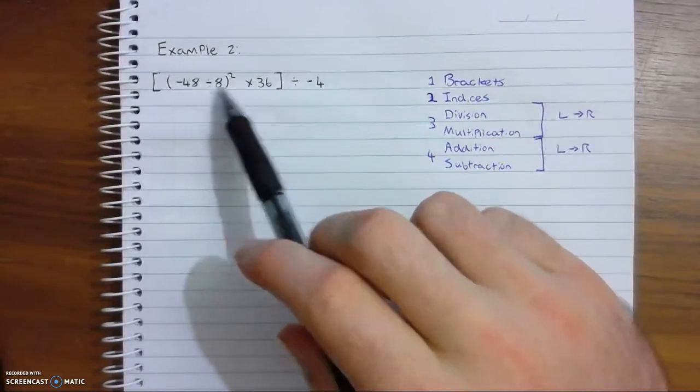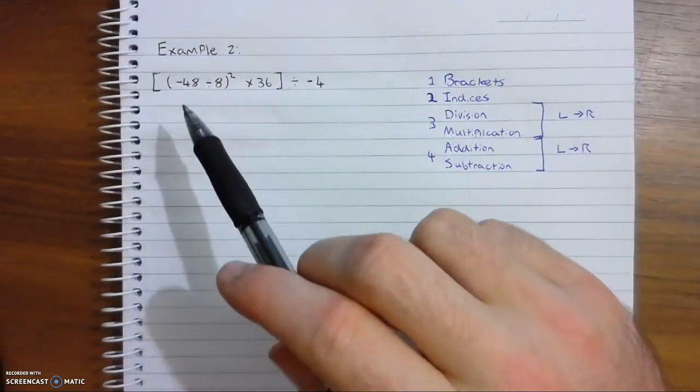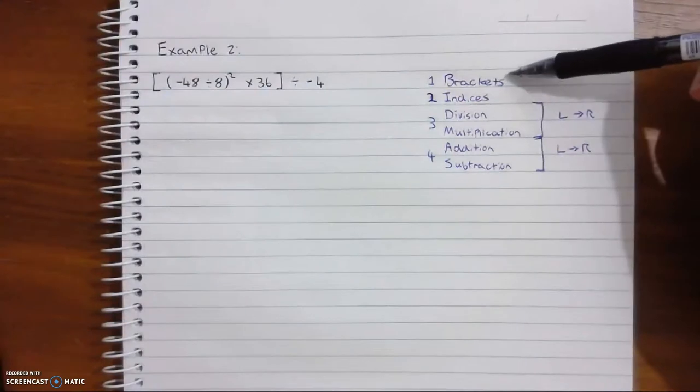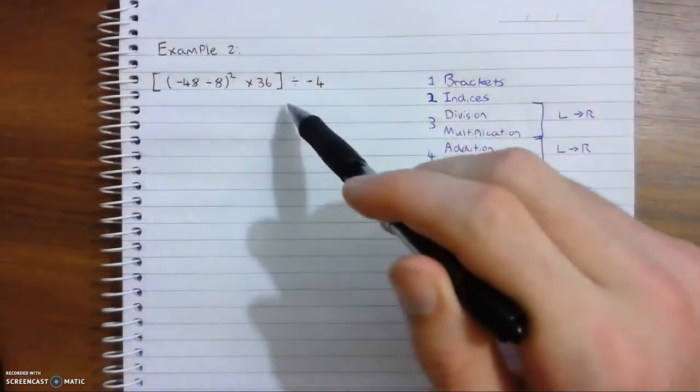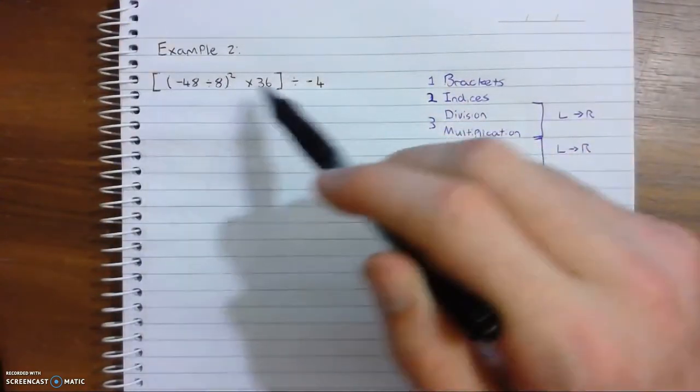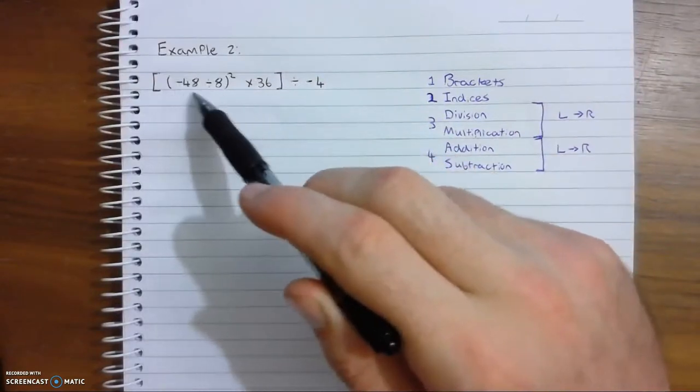Okay, so to complete this we know we do brackets first. So we look at what's inside these big brackets. And in that big brackets we have another set of brackets, so we know we do what's in the brackets first.